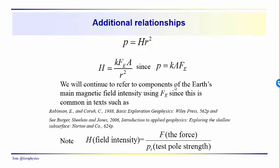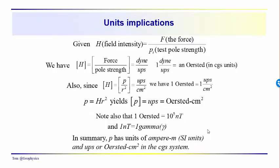We're going to continue to refer to the components of the Earth's main magnetic field using F sub B, since it's common in texts by Robinson and Carew, and also Berger, Sheehan and Jones. Note also that field intensity is equal to the ratio of the force divided by the test pole strength — to confuse things even further, another F — divided by the test pole strength.